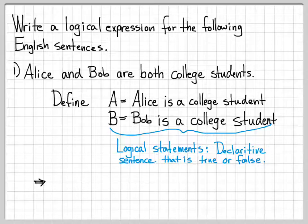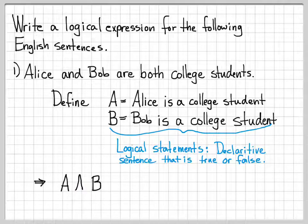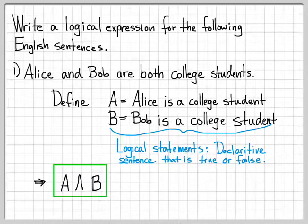Usually when people make mistakes on this type of problem, they either fail to define anything at all, or they define something that isn't a declarative sentence that is true or false. So take the time to write that out. Using our definitions of A and B, we write A and then the logical AND symbol — so A ∧ B. This represents 'Alice and Bob are both college students': Alice is a college student and Bob is a college student.